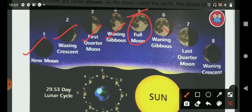Then you can see waning gibbous, last quarter moon, and waning crescent. This is the phases of the moon.